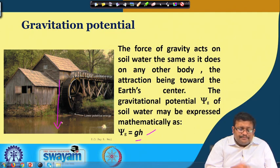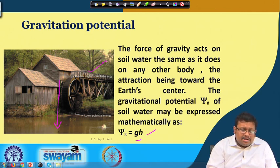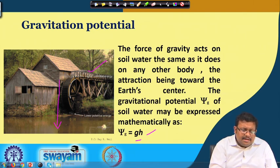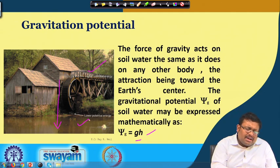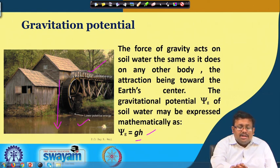Water at a higher height will have higher potential energy than water at a lower height with lower potential energy. Water will always try to move from higher elevation to lower elevation, and this is called gravitational potential.